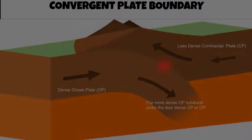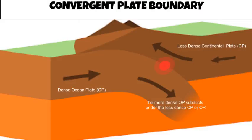Where two plates converge or collide with each other, this is called a convergent plate boundary. This type of boundary creates four main types of landforms. When an oceanic plate converges with either a continental plate or another oceanic plate, the more dense oceanic plate will subduct under the less dense continental or oceanic plate.